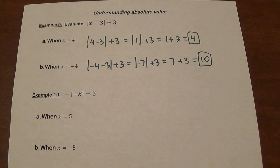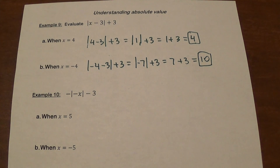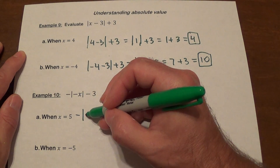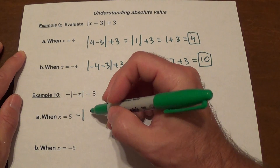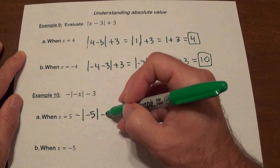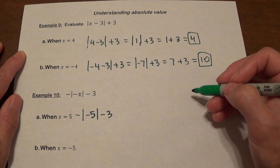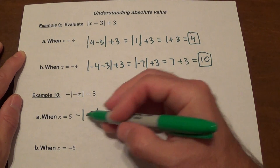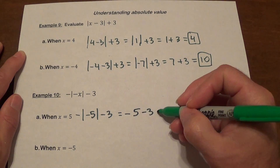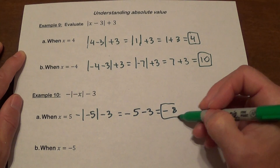Example 10: we have negative the absolute value of negative x, minus 3, and we evaluate for x equals 5. These two negatives cannot be merged — you have to keep them both. Negative x means the opposite of x; since x is 5, negative x is negative 5. The absolute value of negative 5 is positive 5, and the negative in front makes it negative 5, then minus 3. That gives us negative 8.